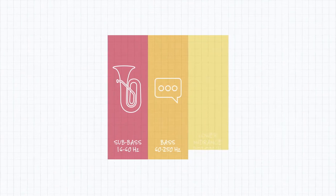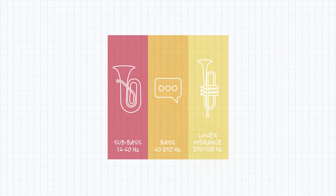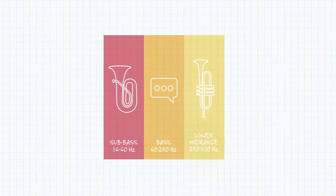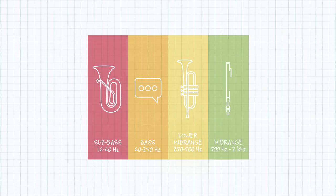The lower mid-range, at 250 to 500 Hz, is where you'd find your typical lead instruments, like a trumpet or alto sax. Mid-range is 500 Hz to 2 kHz, where you'd find your higher pitched instruments, like a piccolo.